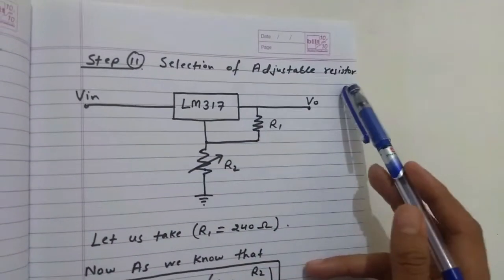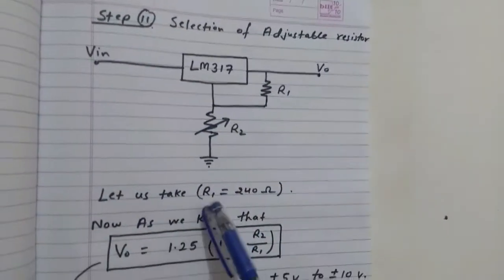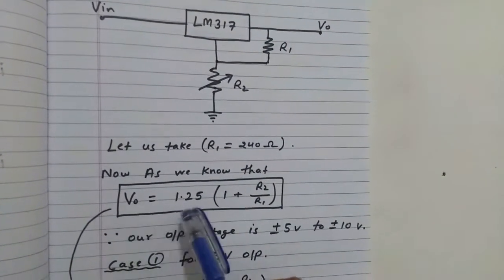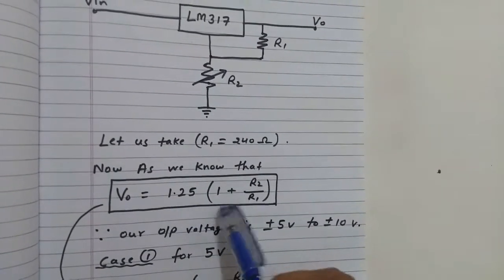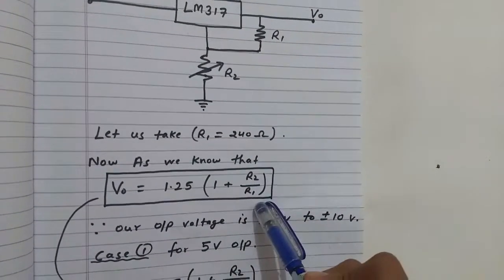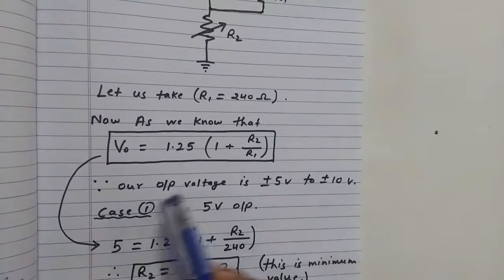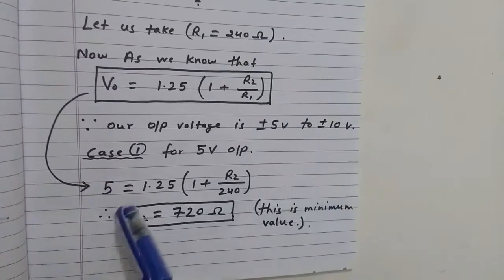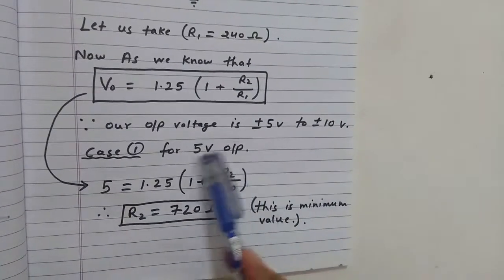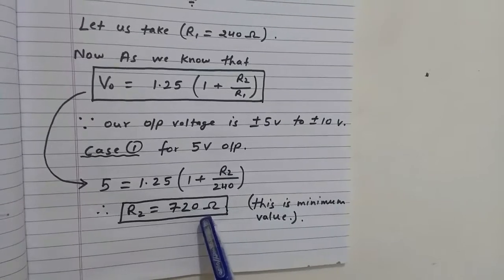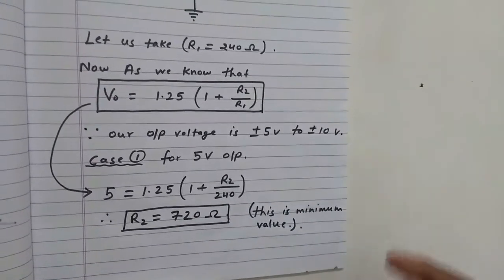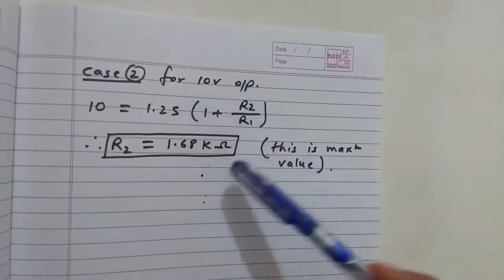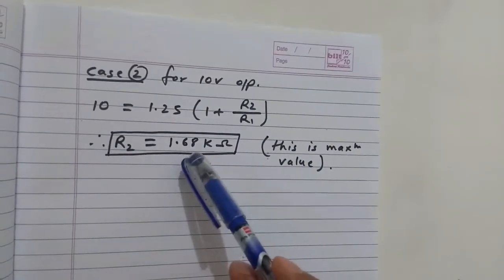The last step is selection of the adjustable resistor. Taking R1 = 240 Ω and using the formula V_out = 1.25 × (1 + R2/R1): for 5 V output, R2(min) = 720 Ω; for 10 V output, R2(max) = 1.68 kΩ.